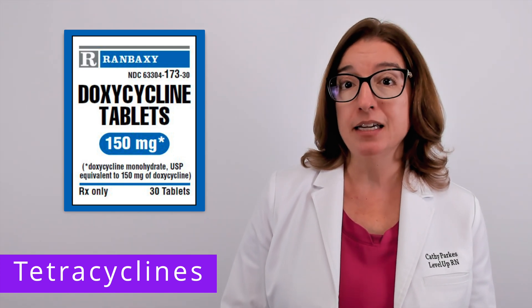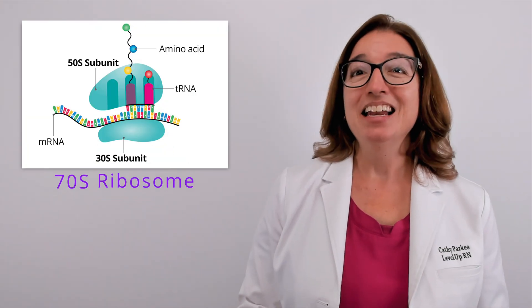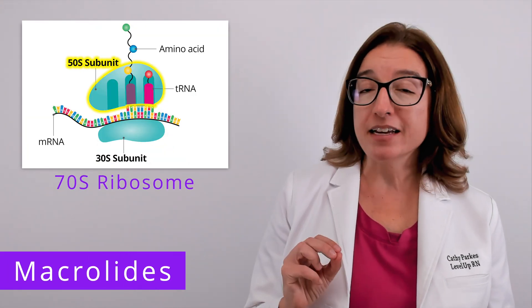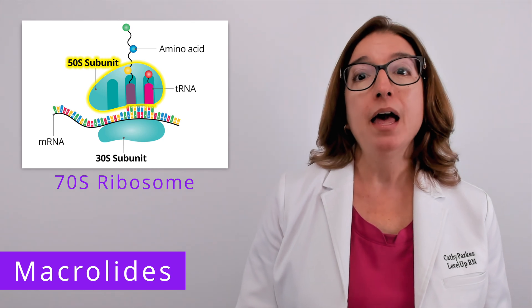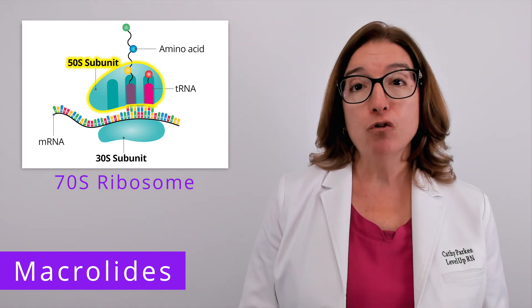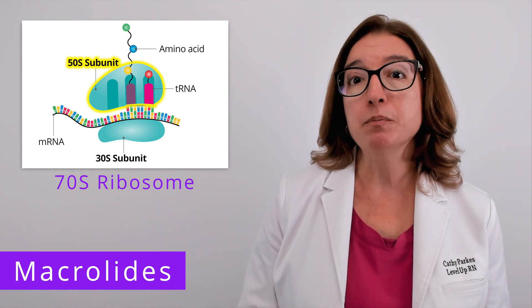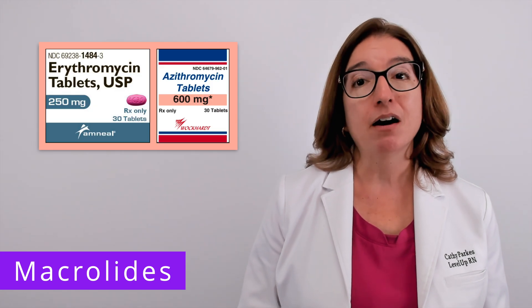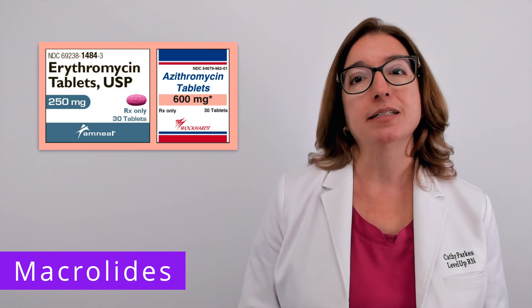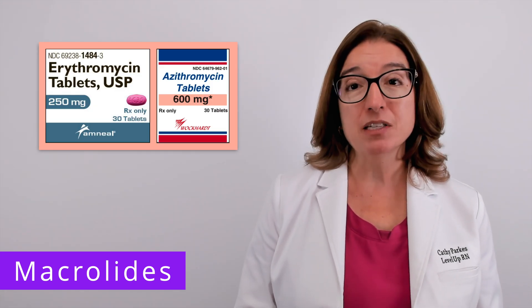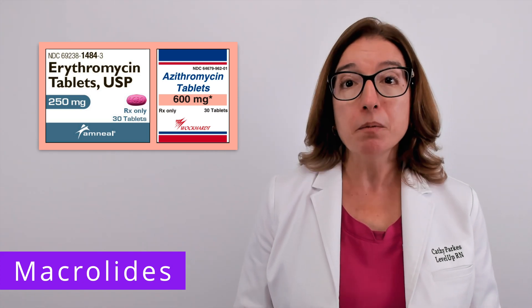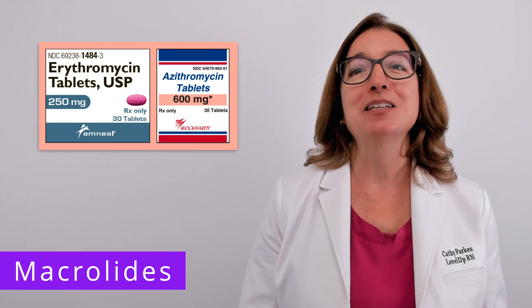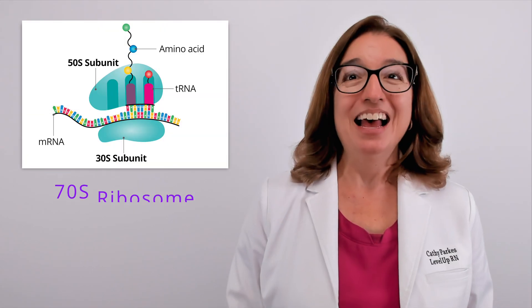An example of a tetracycline is doxycycline. Next, we have macrolides. Macrolides bind to the 50S subunit of the ribosome and prevent the formation of peptide bonds between amino acids during translation. Macrolides are bacteriostatic and broad spectrum. Examples of macrolides include erythromycin, which makes me personally sick as a dog, as well as azithromycin.